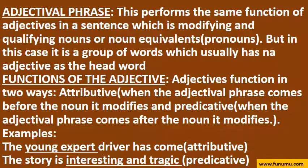Adjectival phrase. This performs the same function as adjectives in a sentence, which is modifying and qualifying nouns or noun equivalents and pronouns. In this case it is a group of words which usually has an adjective as the head word. Adjectives function in two ways: attributive, when the adjectival phrase comes before the noun it modifies, and predicative, when it comes after. Examples: 'The young expert driver has come' — attributive. 'The story is interesting and tragic' — predicative.